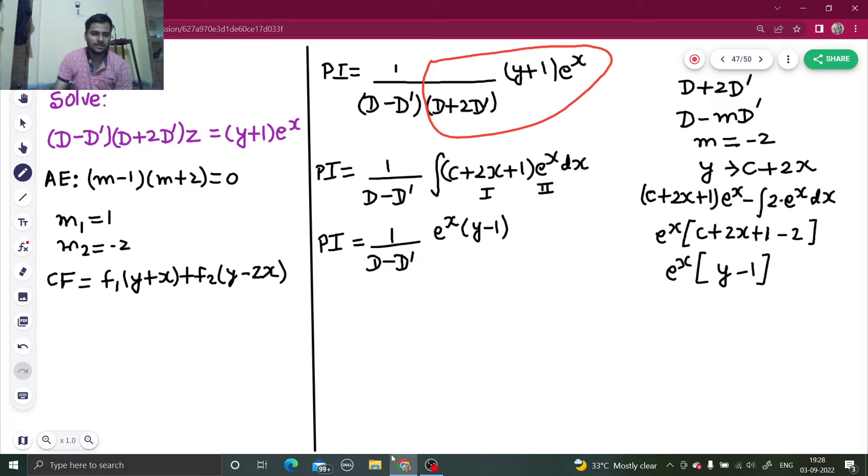Again, compare this to d minus md dash. This d minus d dash, if you compare to d minus md dash, you are getting your m as 1. And you can write your y again as c minus mx, so c minus x. This factor will now be converted to an integral.